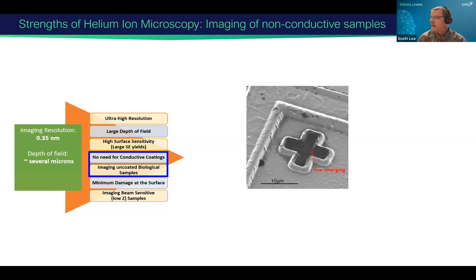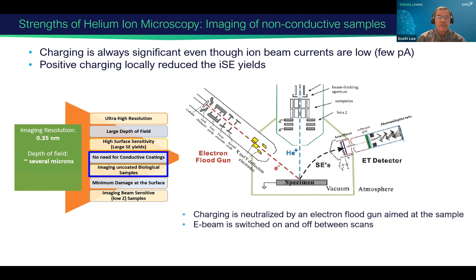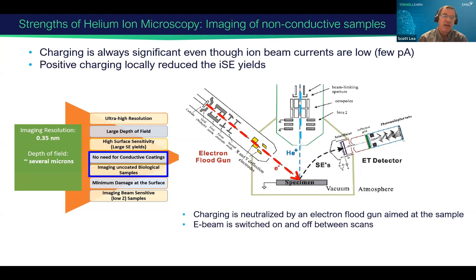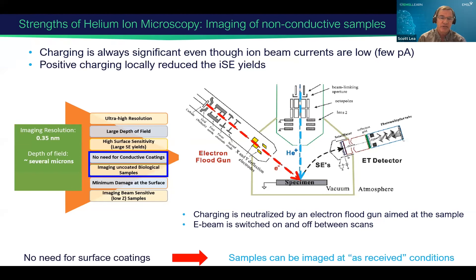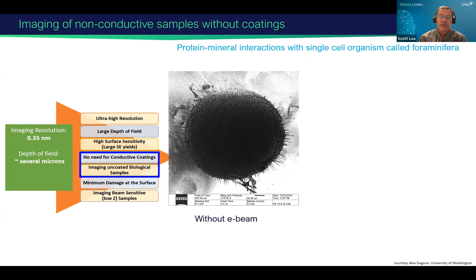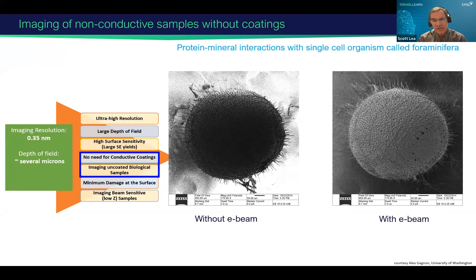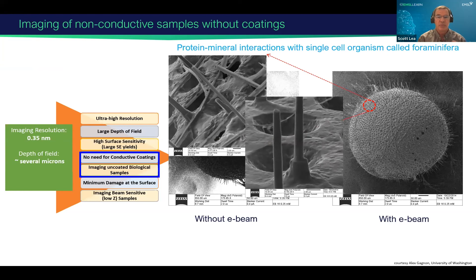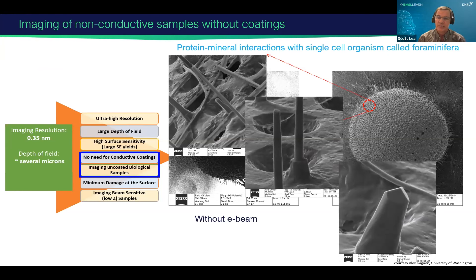Helium ion microscope is also good for non-conducting materials. What happens is the images appear dark because electrons do not escape from the sample because of charging. You can compensate this by alternating the helium beam and an electron flood gun, which does charge neutralization. So many of your images can be acquired on samples without any coating. Here's an example of a foraminifera — without the electron flood gun the image is dark, but with the flood gun you can see all the features clearly and zoom in with a lot of clarity.